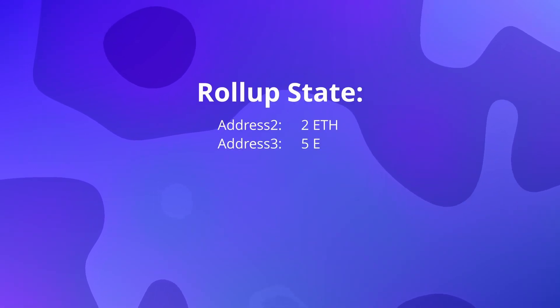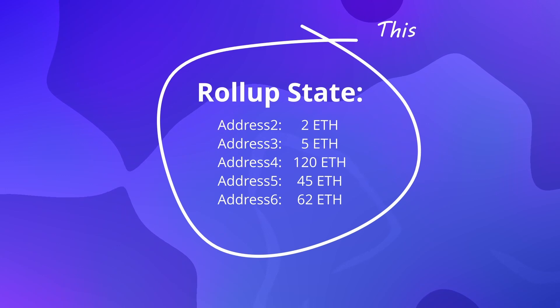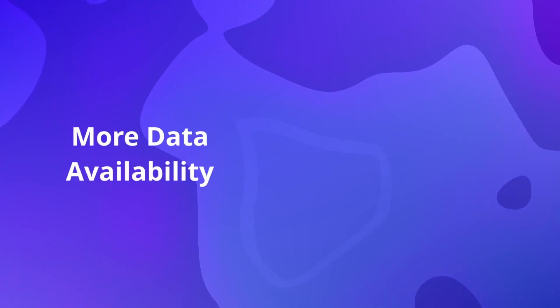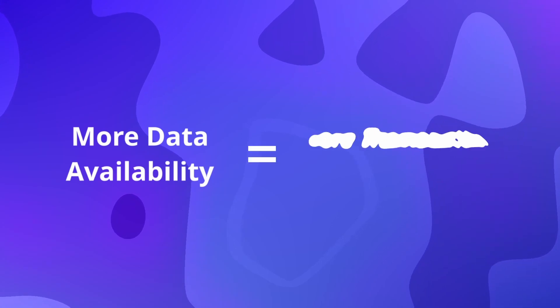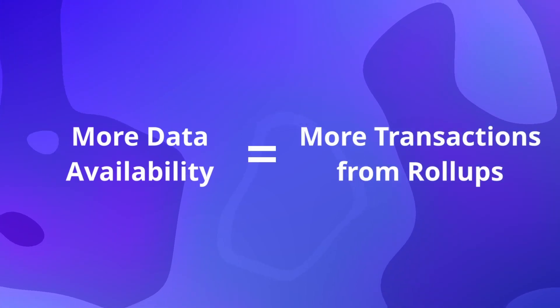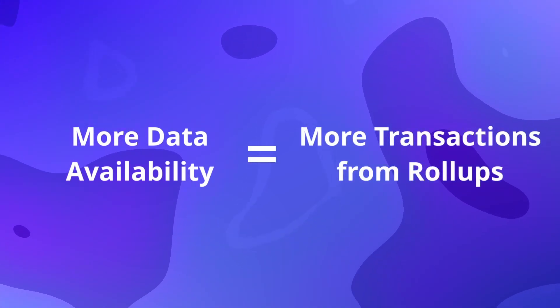So ultimately, data availability is important because rollups need to make the data from their state updates available for anyone to download. The more data availability a settlement layer can verify, the more transactions the rollups can include in their state updates, so the more transactions the ecosystem in general can handle.